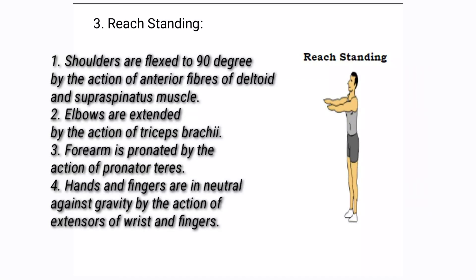The next position is reach standing. Here, the shoulders are flexed to 90 degrees by the action of anterior fibers of deltoid and supraspinatus. The elbows are extended by the action of triceps brachii. The forearms are pronated by the action of pronator teres. The hands and fingers are in neutral position by the action of extensors of wrist and finger.